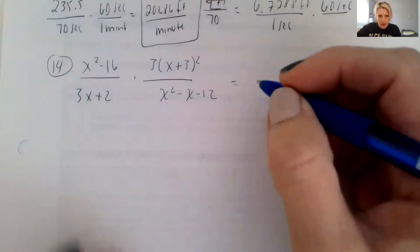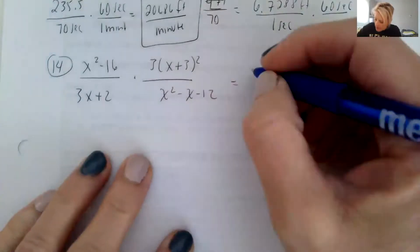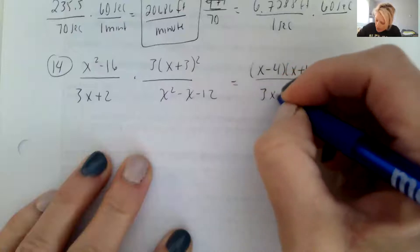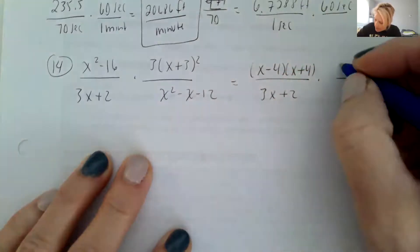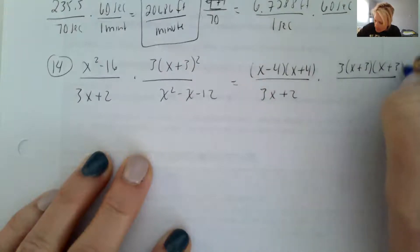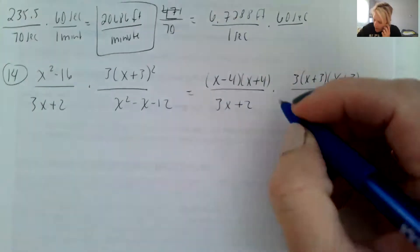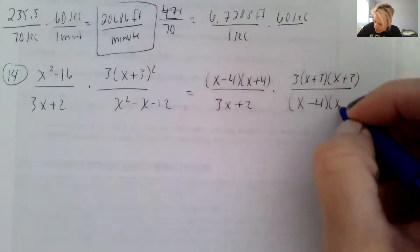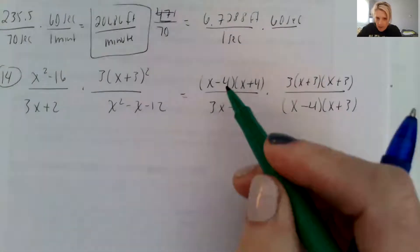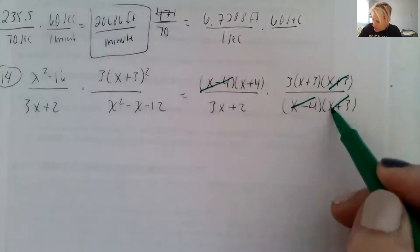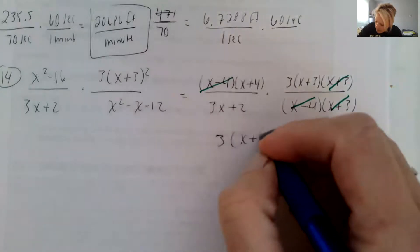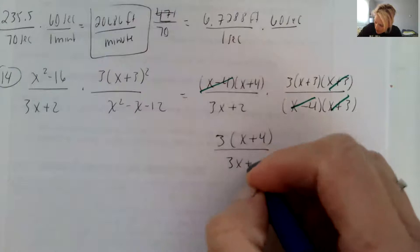So we have to factor each of the four pieces to be able to do any canceling out of common factors. So bottom left is already factored, top right is three, and we can write this as x plus three times x plus three. And then the bottom right can factor into x minus four times x plus three. And then you can cancel common factors of x minus four and x plus three. And we're left with three times x plus four in the numerator over three x plus two.